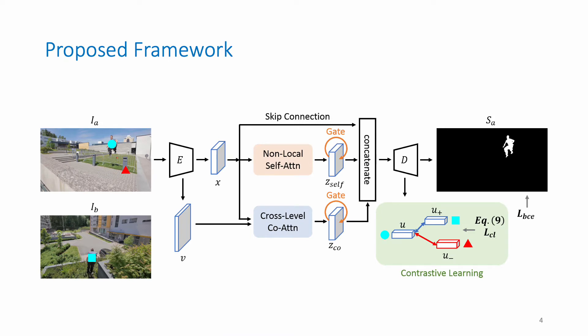Here is the pipeline of the proposed framework. The feature of the input image is first extracted by an encoder, then we apply a non-local self-attention module on the feature X. In addition, a cross-level co-attention module is applied on the low-level feature V and the high-level feature X. The two attention features are then weighted by a gating function.